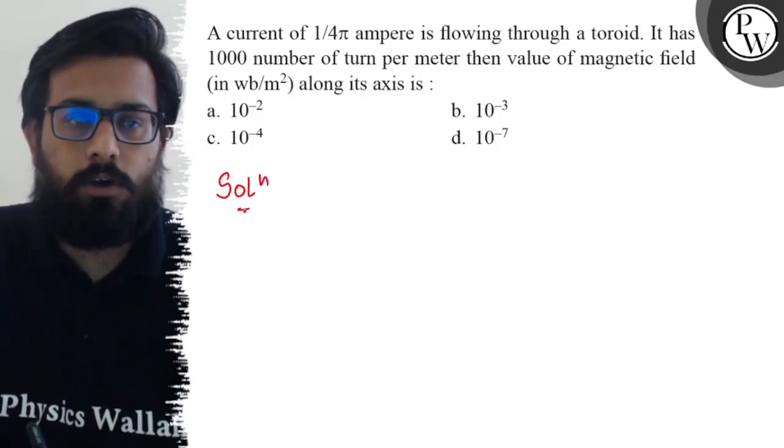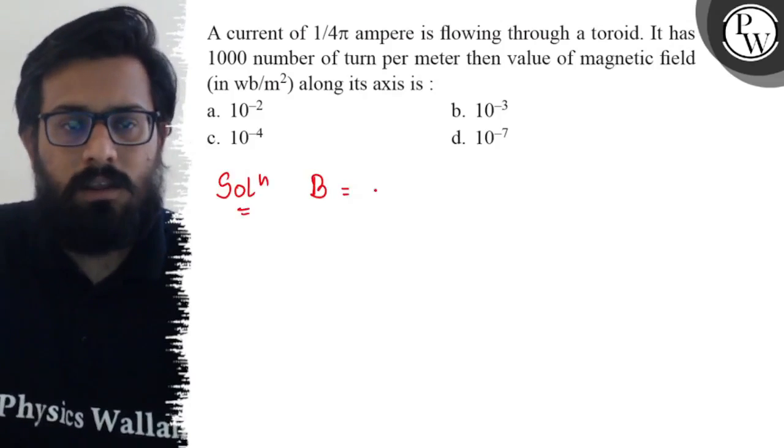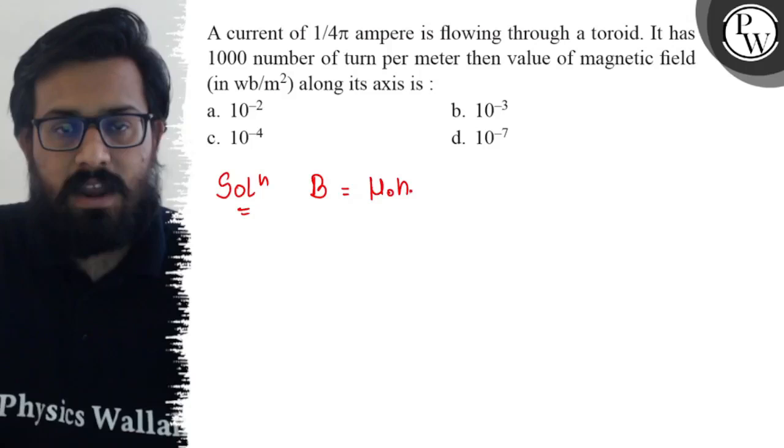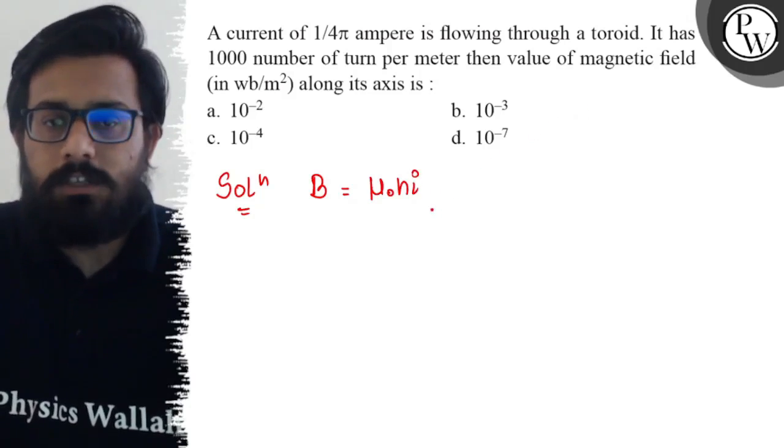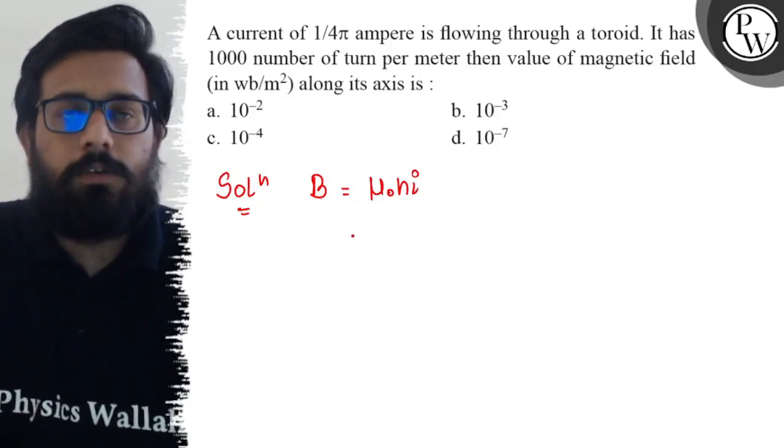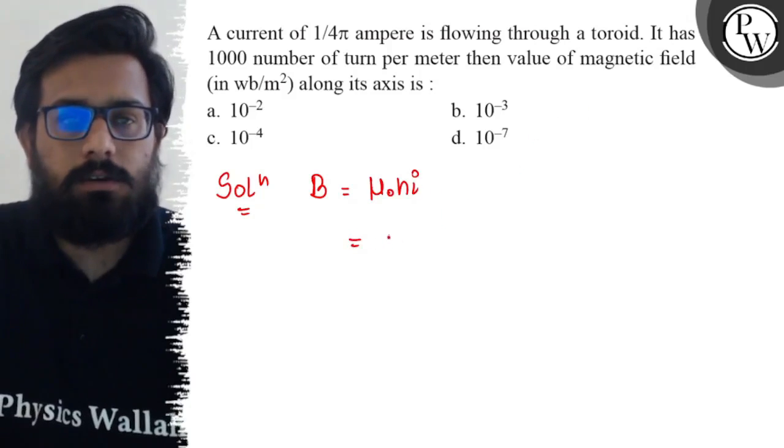So here in this question, for a toroid, again we have the same formula: B = μ₀ni, where small n is the number of turns per unit length. So from here this can also be written as μ₀...